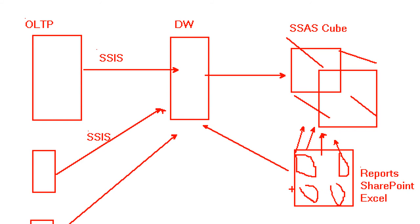Tuning the BI environment involves SSIS for retrieving data out of the OLTP environment into the data warehouse. It also involves tuning that data warehouse so data can be retrieved more efficiently. We have a cube layer — tuning the cube's processing and querying in our MDX running instance — and how we scale out reporting services appropriately.